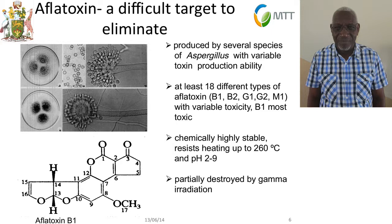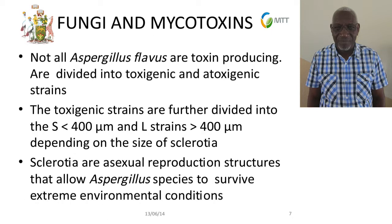The structure of aflatoxin, as shown on the slide, is a very closed structure, which means it is very stable. It can resist high temperatures of up to 260°C and can also be stable over a wide range of pH. This is what makes it very difficult to destroy, and being so toxic makes it a very important toxin to be concerned about.